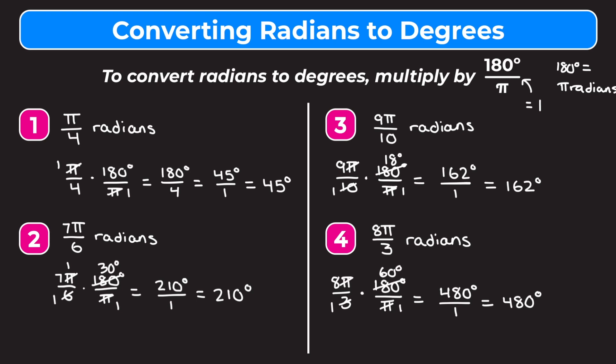Hopefully this video helps you understand how to convert radians to degrees. You just have to remember to multiply by 180 degrees over pi. If you want to learn how to convert degrees to radians, check out the link in our description for a video explaining how to do that.